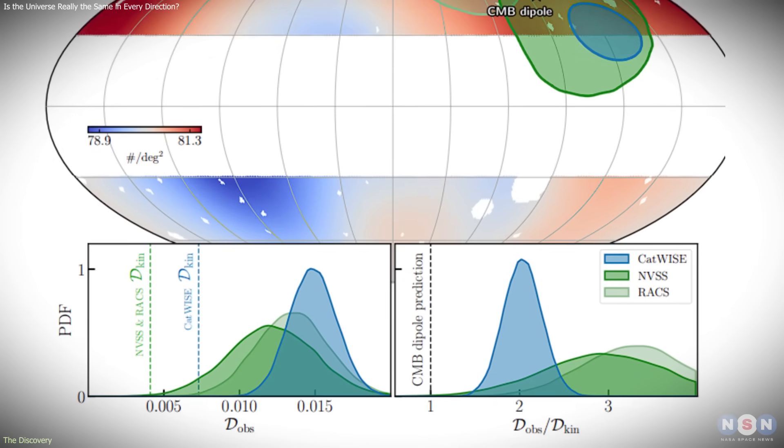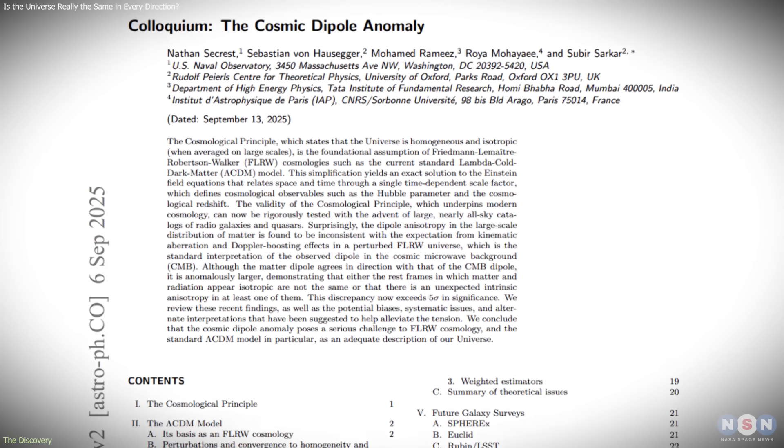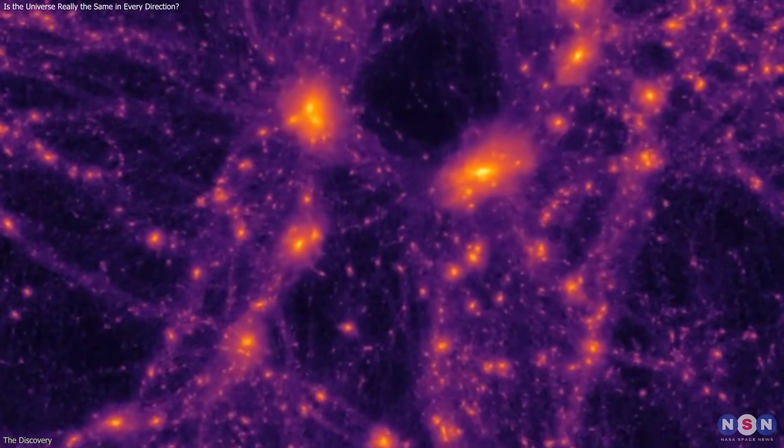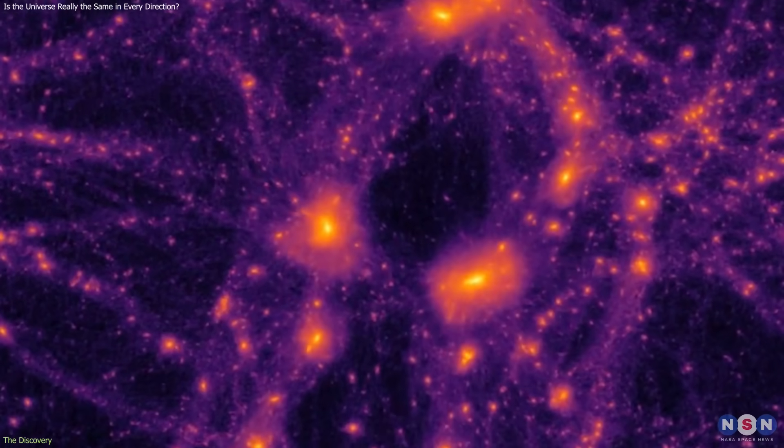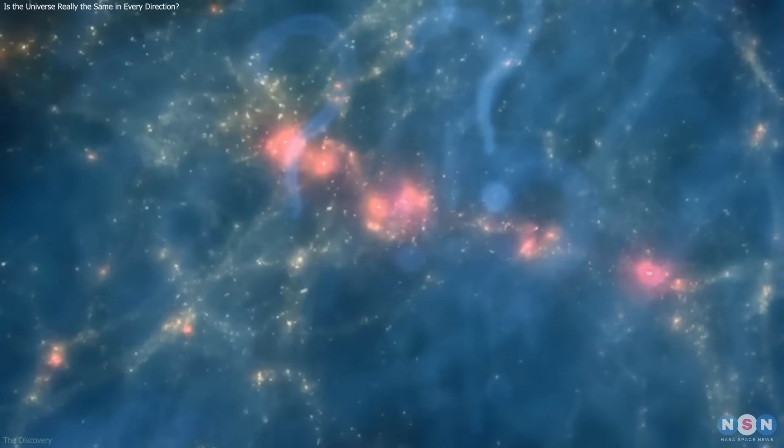This mismatch between the predicted and observed matter dipole is known as the cosmic dipole anomaly. It represents a failure of a precise, long-standing test of isotropy and raises fundamental questions about how the universe is structured on the largest scales.